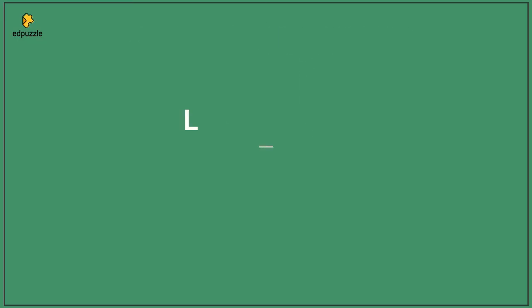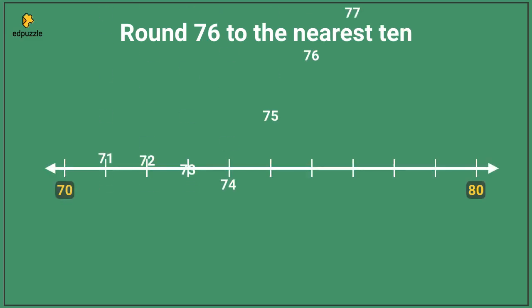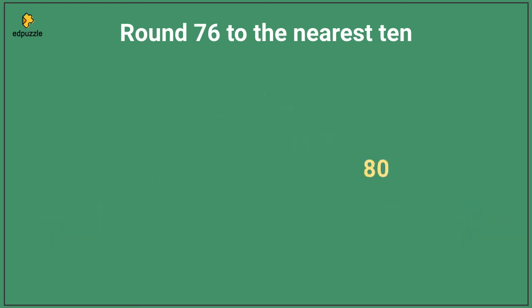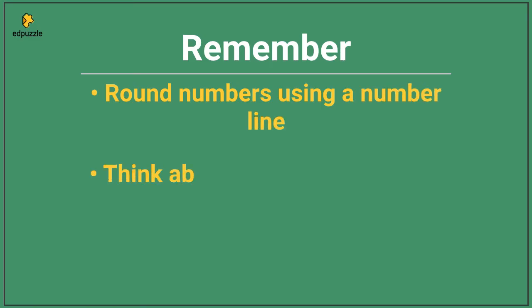Here's your last problem for this video. Round seventy-six to the nearest ten. Seventy-six is between the tens of seventy and eighty. If we imagine those numbers on a number line as a hill, and put a ball right at seventy-six, it would roll forward and get to eighty. Therefore, seventy-six rounded to the nearest ten is eighty. From today, remember, we learned that you can round numbers on a number line by thinking of the number line as a hill.